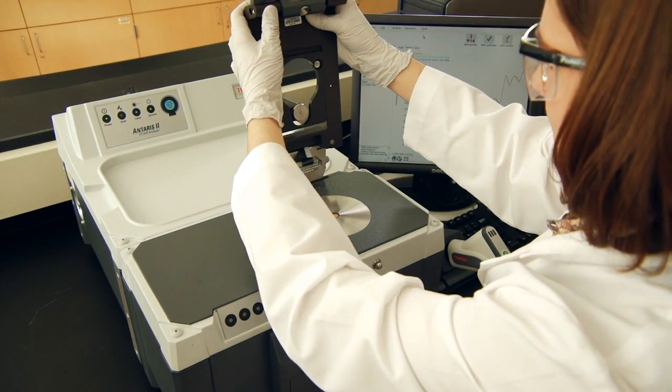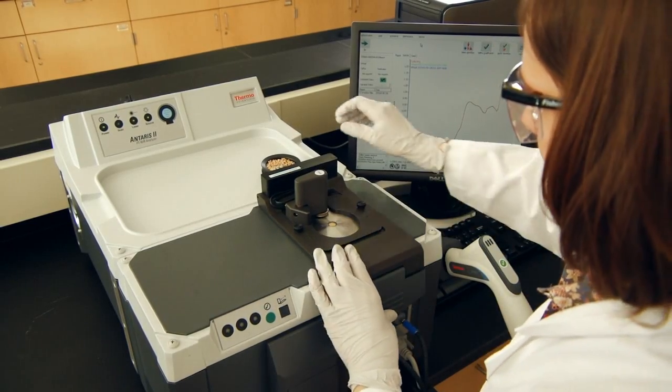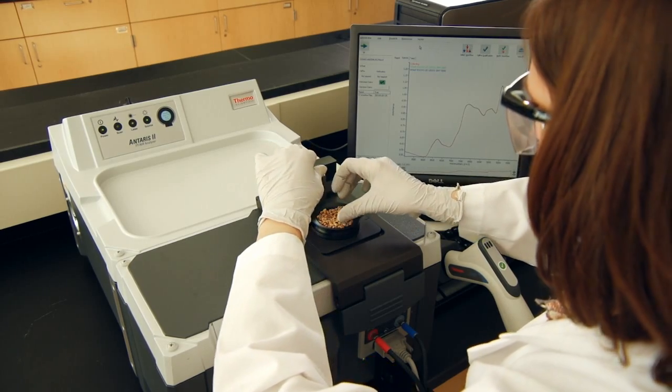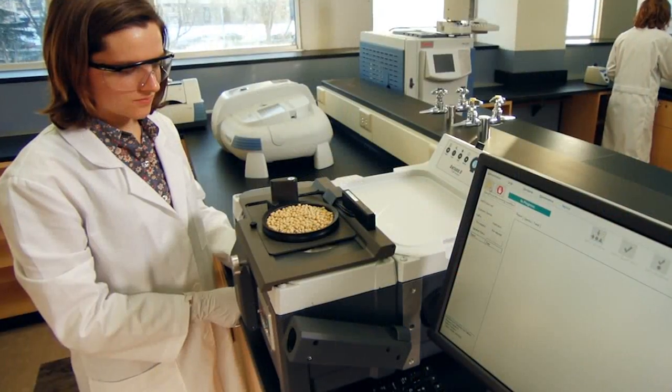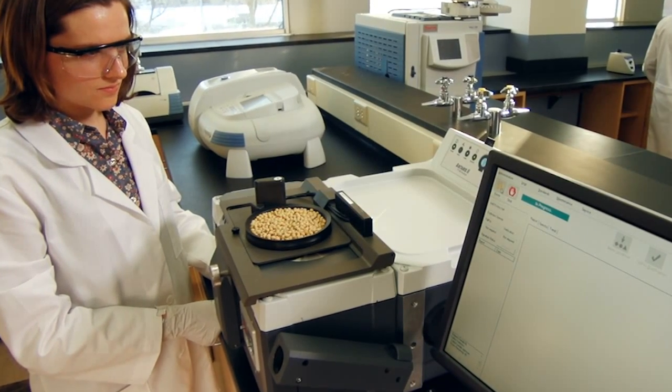With a wide range of easily swapped integrating sphere accessories, the Antares II can address all of your food and feed analysis needs, from raw materials to final products, including a sample cup spinner to accurately analyze heterogeneous samples.